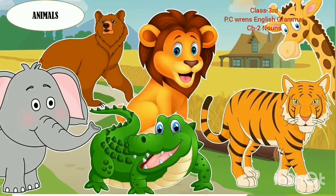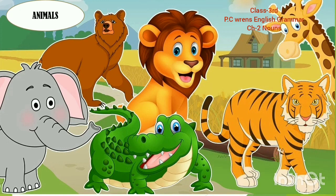The next category is animals. The name of animals is also called a noun. As you can see on the screen, there are many animals: an elephant, a crocodile, a lion, a giraffe, a tiger, a bear. These are the examples of animals. Animals means janwar, and janwaro ke naam ko bhi ham noun kehte hain.